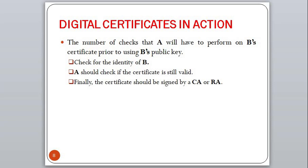If A and B are the two communicating parties and A has received B's certificate, before using it we need to perform the following checks. First, check the identity of B — this can be determined by checking whether the certificate contains B's name. Second, A should check if the certificate is still valid, since the validity period is contained in the certificate. Finally, the certificate should be signed by a CA or RA — A should verify the signature contained in the certificate. Since the CA is globally known and A has access to the CA's public key, this can be verified easily.